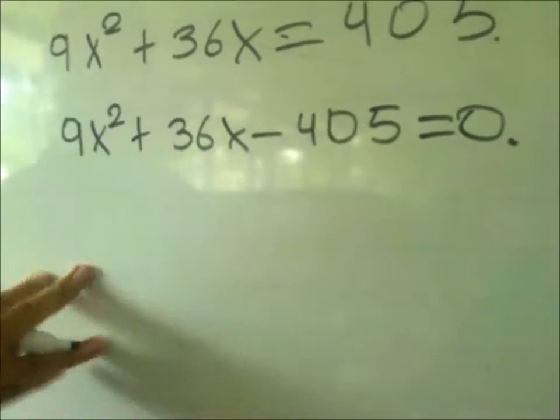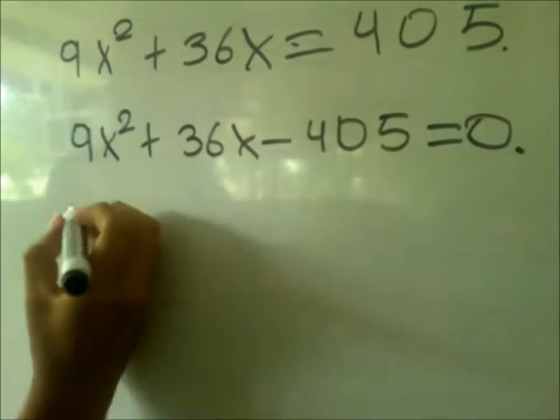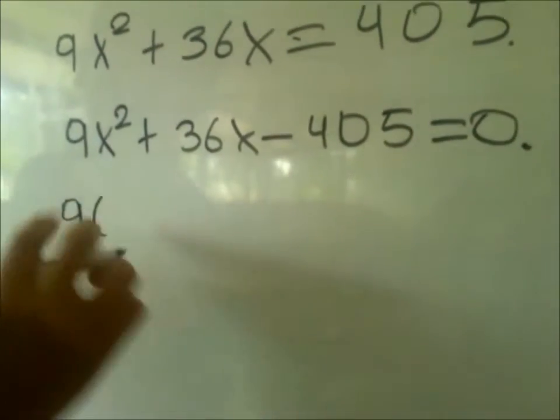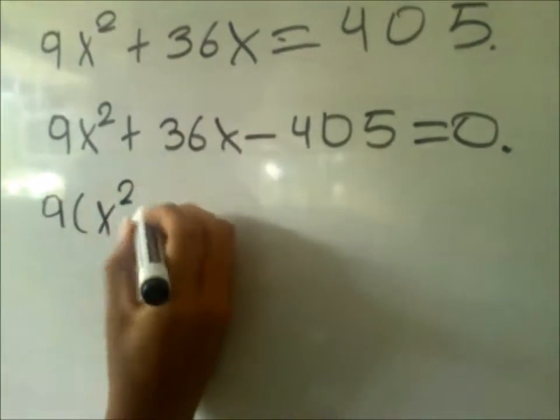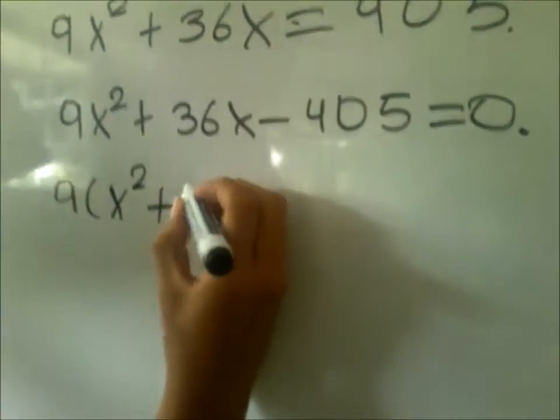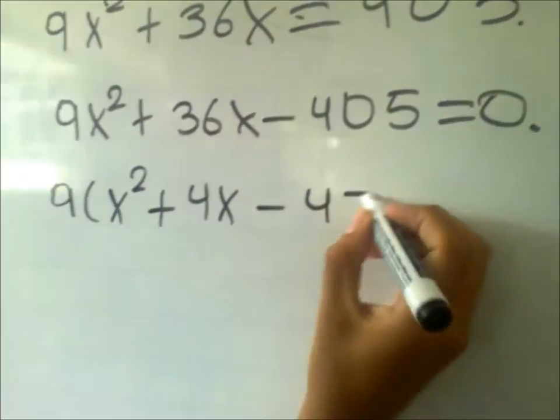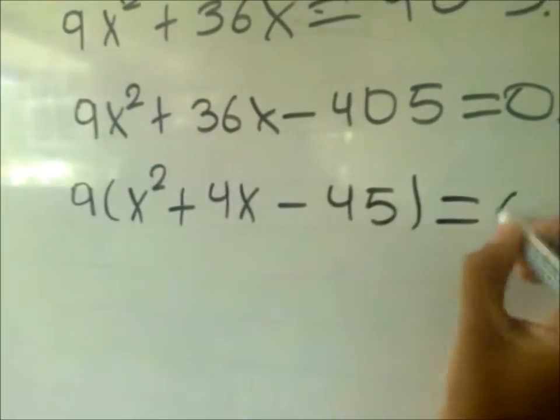Once we have this, we have a common factor which would be 9, the factor for all. 9 for 9x² gives us x², plus 4x minus 45. This is equal to 0.